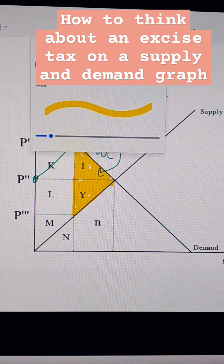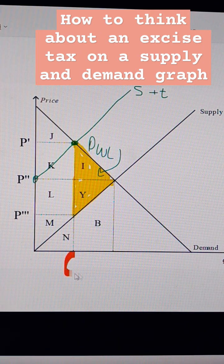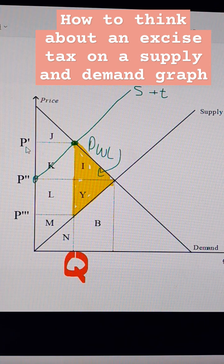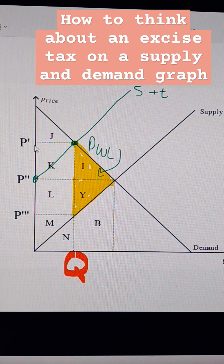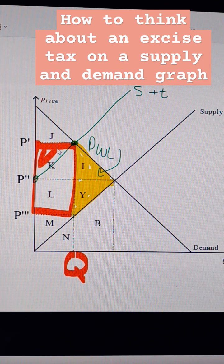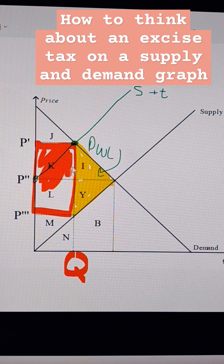The government is putting a tax on this market, so that means that whatever this quantity is will be taxed at a rate of P' to P3. The areas of K and L would both be the tax revenue for the government.